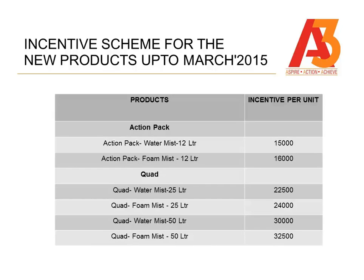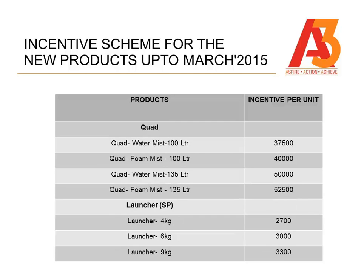This is the incentive scheme which is applicable. You can see the amount of money that you will be earning by selling these products from now to end of March: Action Pack Foam Mist 12L — 16,000 Rs.; Quad Plus Mist 50L — 30,000 Rs.; Launcher 4kg — 2,700 Rs.; Launcher 6kg — 3,000 Rs.; Launcher 9kg — 3,300 Rs.; Quad Foam Mist 100L — 40,000 Rs. as incentive.